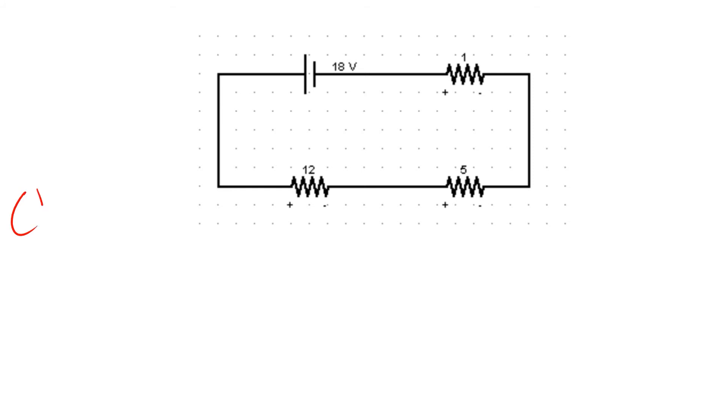The next thing that we want to calculate is the value of the current that will pass through your circuit. Given that this is a series connection of three resistances with a certain voltage source, we can use the formula V = IR. We know that I equals V over R, where the value of R here is your equivalent resistance.